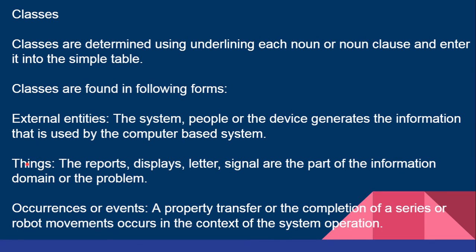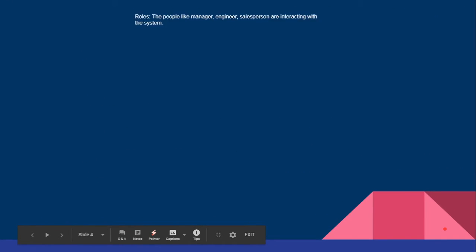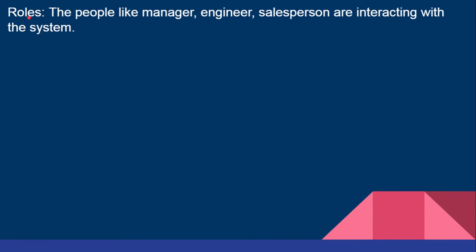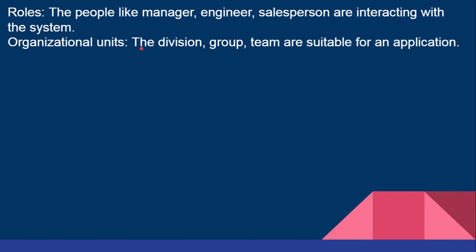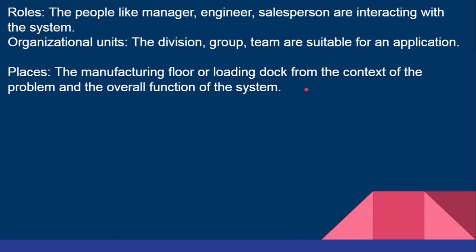Other class components include: external entities, things being displayed or created, and events or operations. Then there are roles — the activities played by people involved in the system, like the manager, engineer, or salesperson interacting with the system. Each component has a role, which may be a manager, engineer, or another responsible role. There are also organizational units — divisions, groups, and teams suitable for an application. A division may work for some purpose, with a group of people and several teams. These units interact with each other in the system.